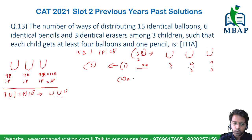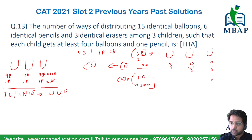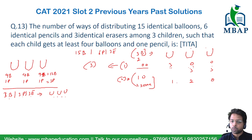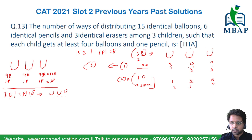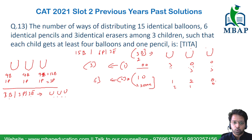Case 2: exactly 1 child gets 0 balloons and 2 children each get a positive amount. For example, child 3 gets 0, child 2 gets 1, and child 1 gets 2 — summing to 3. For each child who gets 0, the split (2,1) can be assigned in 2 ways, and 0 can fall to any of 3 children, giving 3 × 2 = 6 ways.